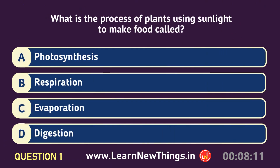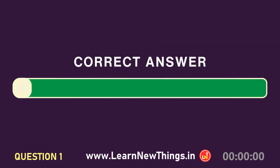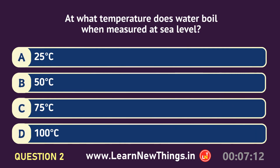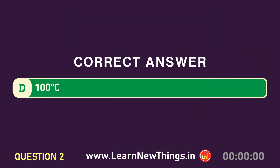What is the process of plants using sunlight to make food called? Photosynthesis. At what temperature does water boil when measured at sea level? 100 degrees Celsius.